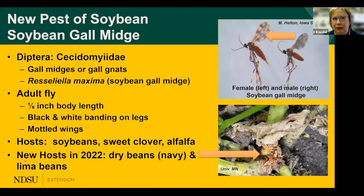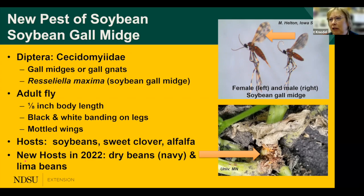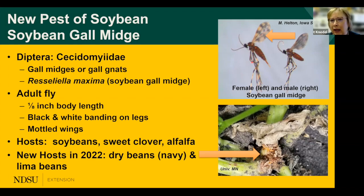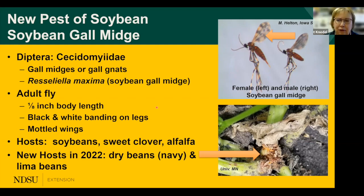First, I'm going to talk about a new pest of soybean: soybean gall midge. It's in the family Cecidomyiidae, which is a gall midge family — many of you are familiar with wheat midge, which is also in this family. As you can see in the picture, the fly is very small, only about an eighth of an inch, with mottled wings and black and white striped legs. You're not likely to see it out in the field since they're very short-lived.